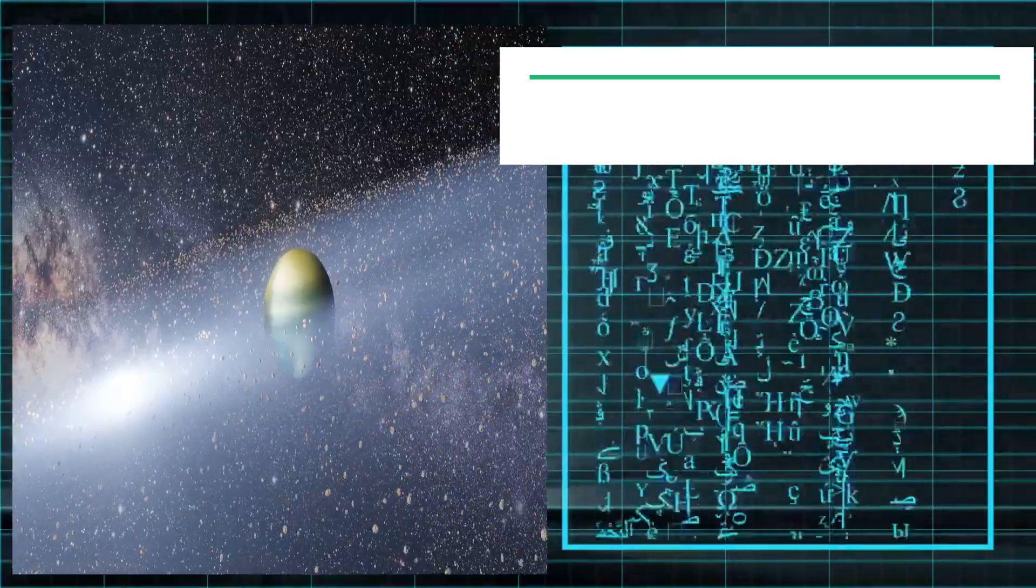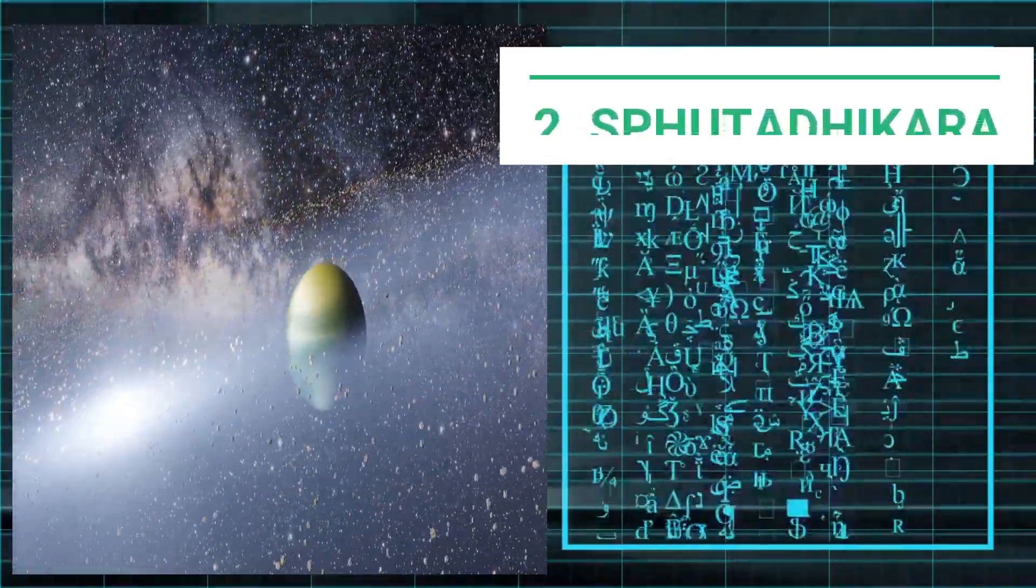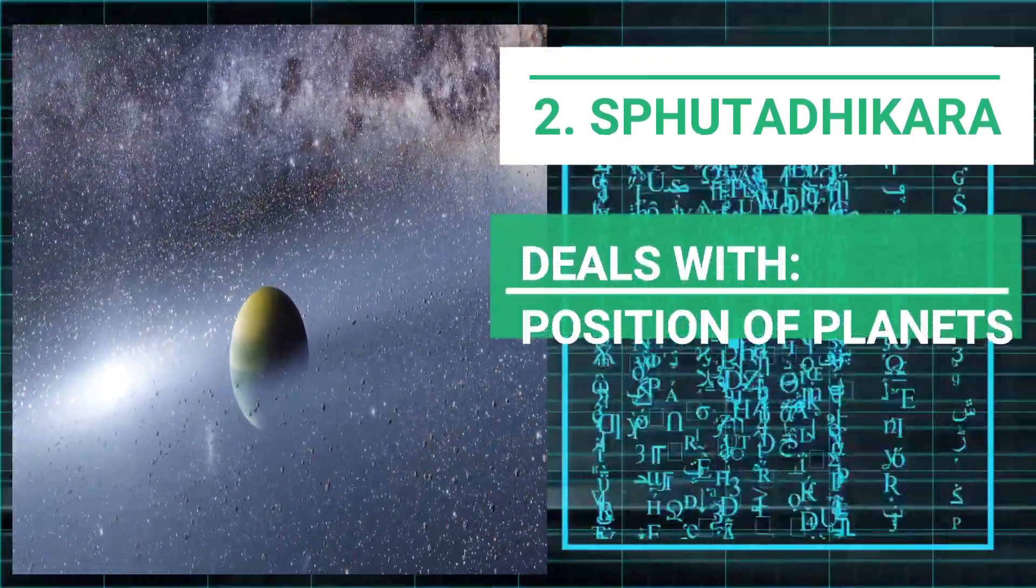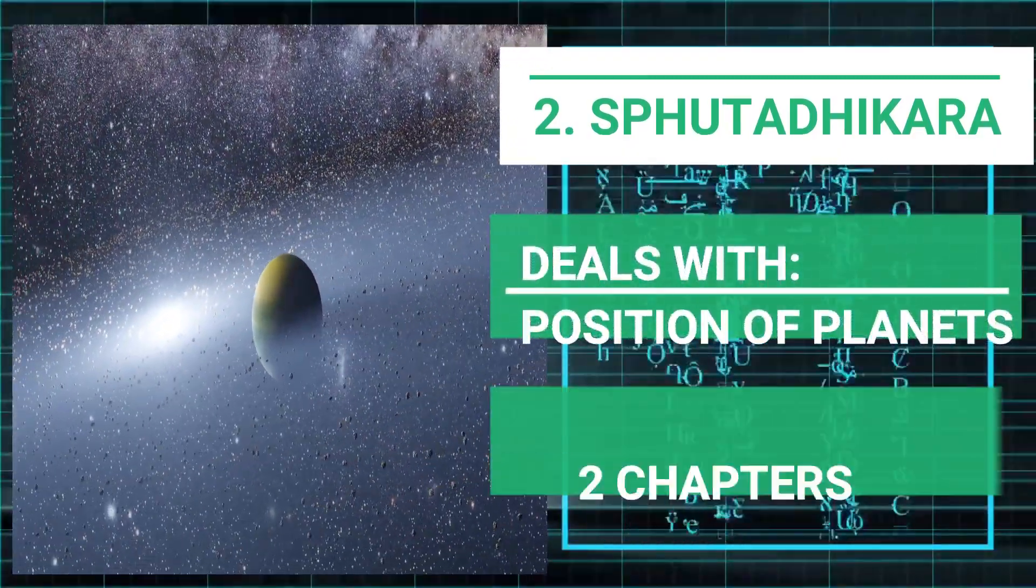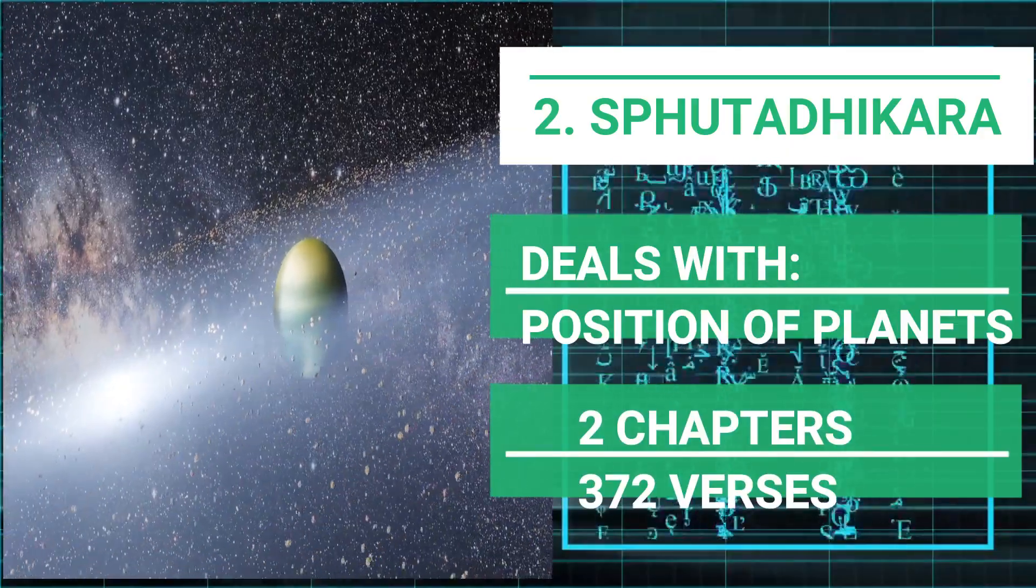Sphutadhikara deals with the position of planets and has two chapters with 372 verses or slokas.